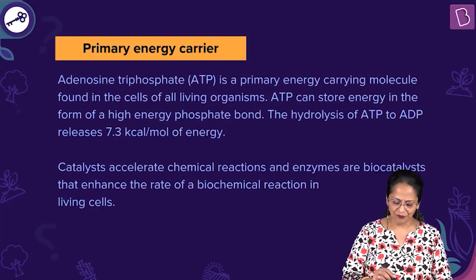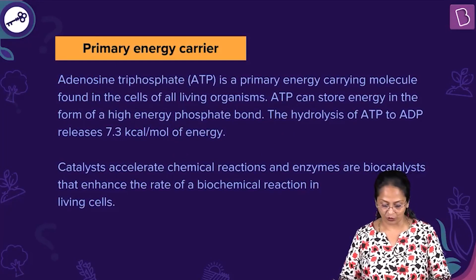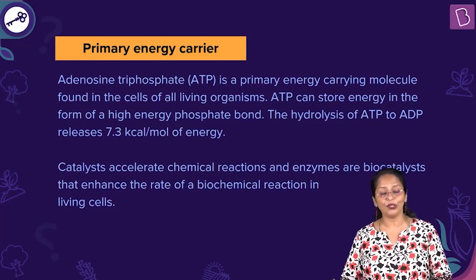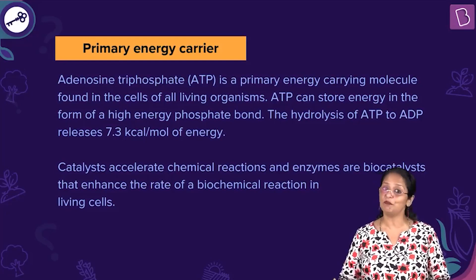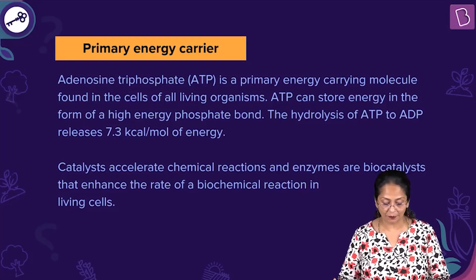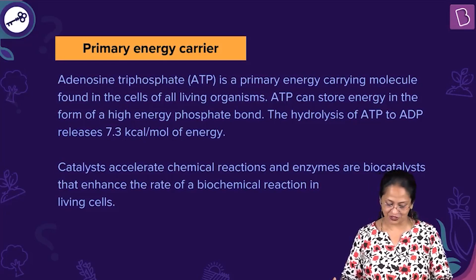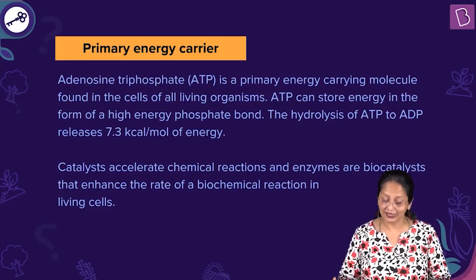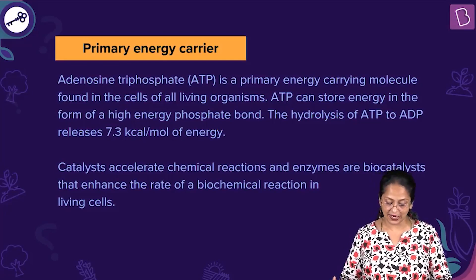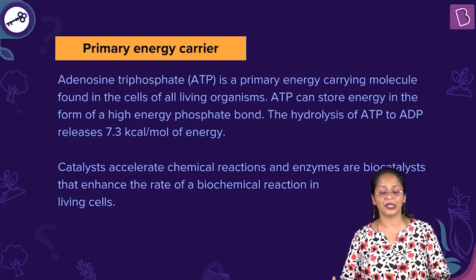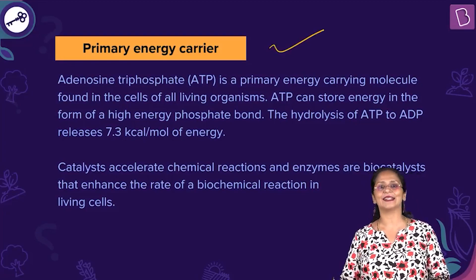Adenosine triphosphate, ATP, is a primary energy-carrying molecule found in cells of all living organisms. ATP can store energy in the form of high-energy phosphate bonds. The hydrolysis of ATP to ADP releases 7.3 kcal per mole of energy. Catalysts accelerate chemical reactions, and enzymes are biocatalysts that enhance the rate of biochemical reactions in living cells. So the right answer: ATP is a primary energy carrier.